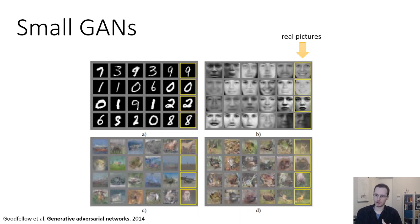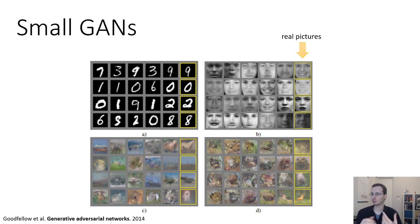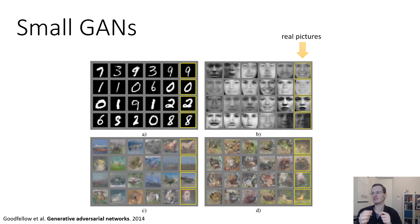Let's look at some GAN examples from the literature. These images are from the original paper introducing GANs by Ian Goodfellow in 2014. The images highlighted in yellow are real images from MNIST, a faces dataset, and likely CIFAR-10 on the bottom. The non-highlighted images are generated by the GAN. The handwritten digits look very much like realistic ones. The faces look pretty good — a little blurry, not quite as crisp as real faces, but still good. The more realistic pictures in the lower row kind of look like real pictures if you squint, but are still pretty messy. This was 2014 — seven years ago.